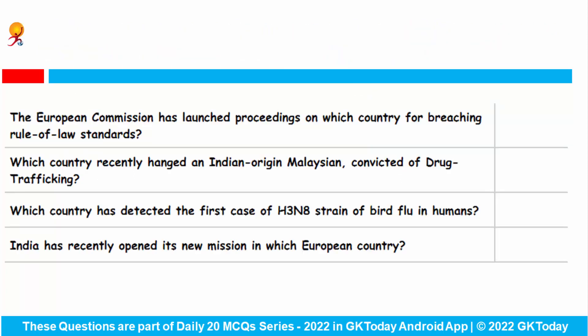The European Commission has launched proceedings on which country for breaching rule of law standards? The European Commission has launched proceedings on Hungary for breaching rule of law standards, which could ultimately lead to the partial suspension of support payments to Hungary. Hungary has two months to provide an explanation and propose a remedy. This case marks the first use of the mechanism which allows the European Union to take action to protect its budget.